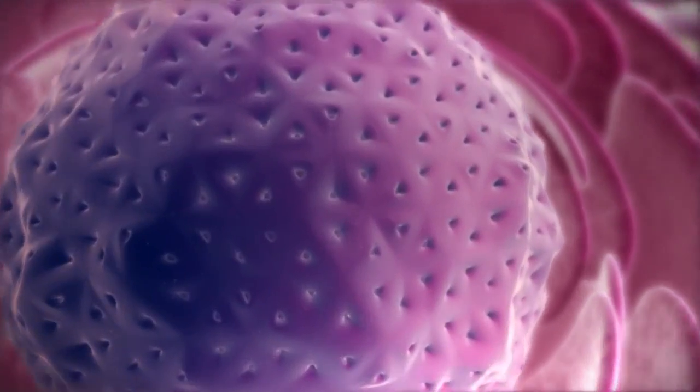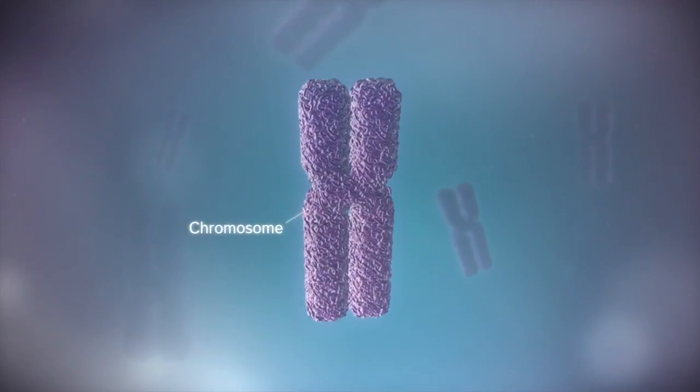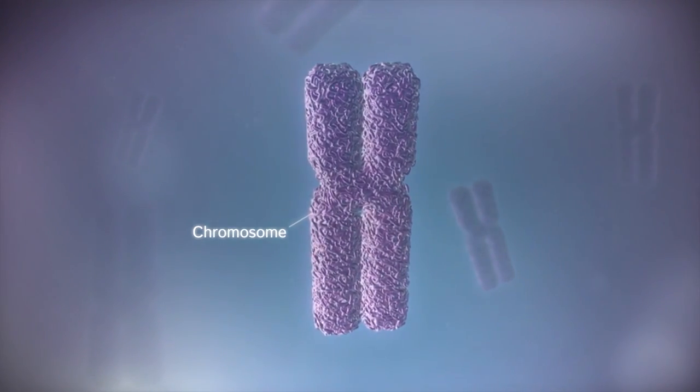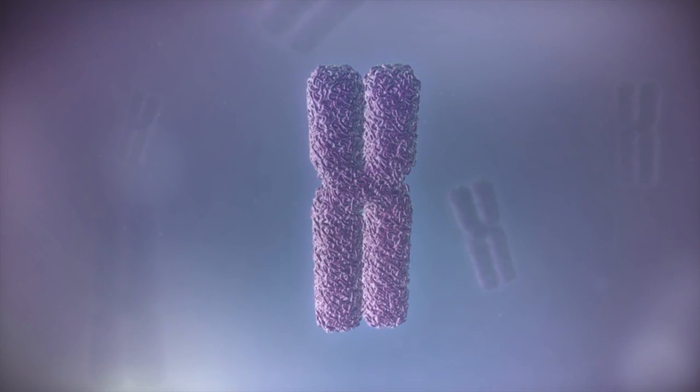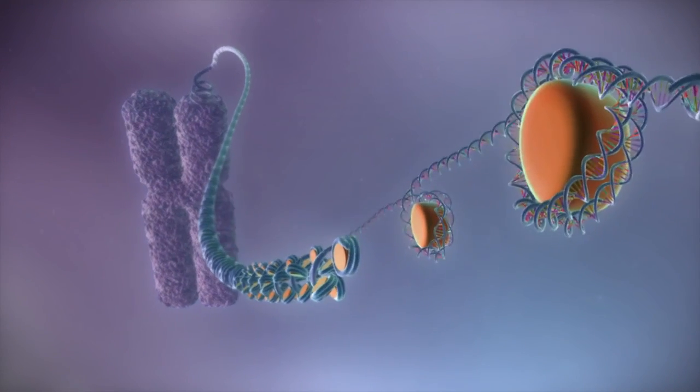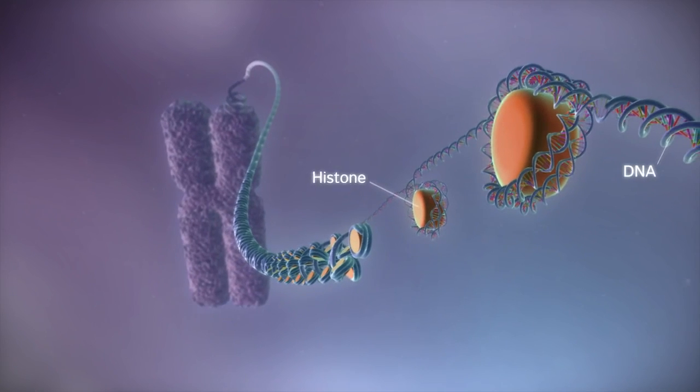In humans, the genome is split between 23 pairs of chromosomes. Each chromosome contains a long strand of DNA, tightly packaged around proteins called histones.